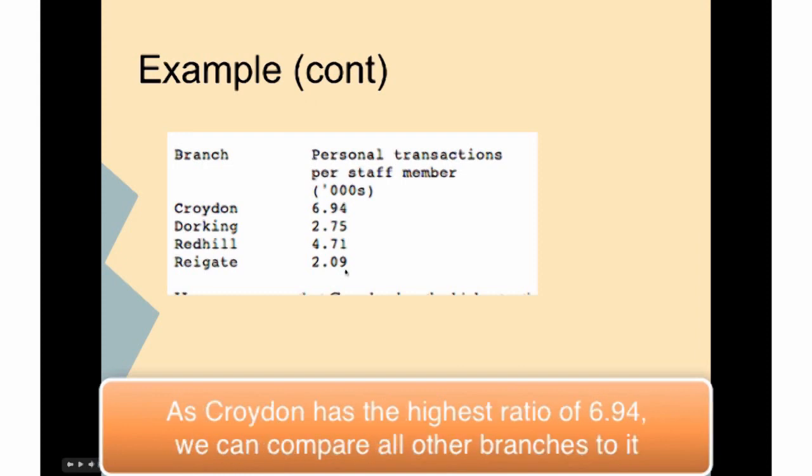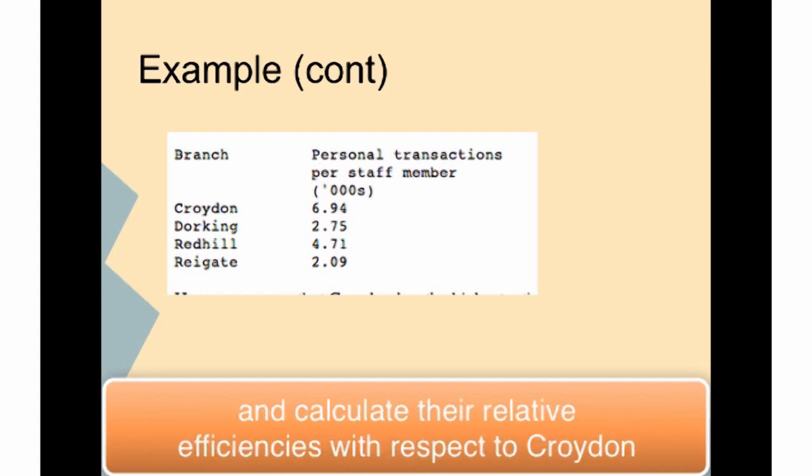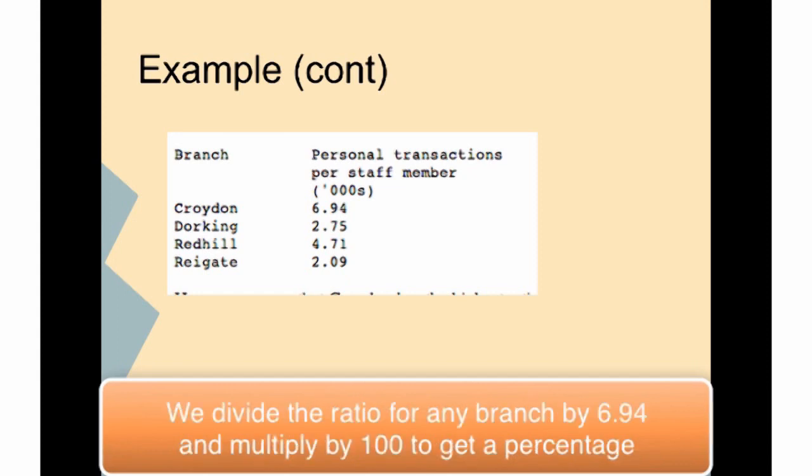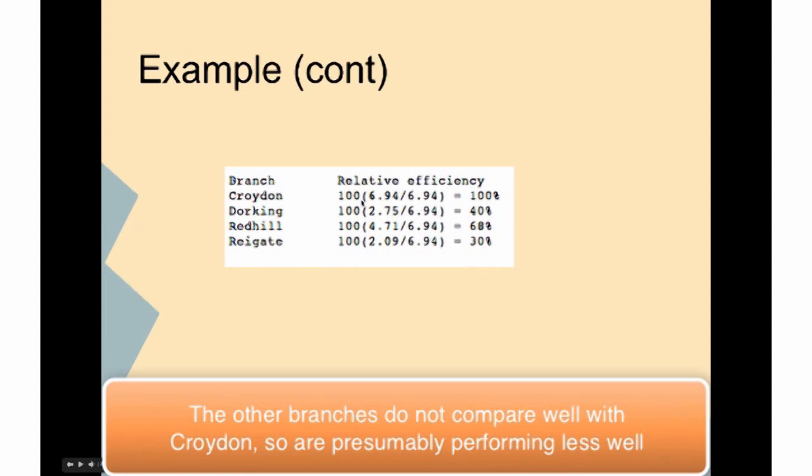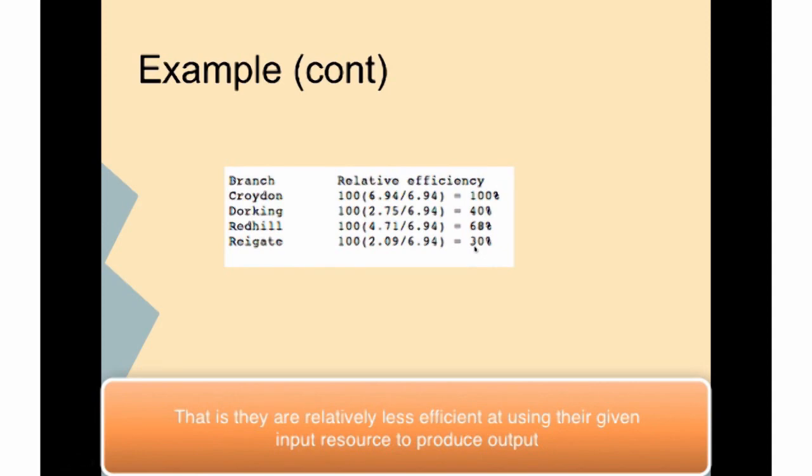As Croydon has the highest ratio of 6.94, we can compare all other branches to it and calculate their relative efficiencies. To do this, we divide the ratio for any branch by 6.94 and multiply by 100 to convert to a percentage. The other branches do not compare well with Croydon, so are presumably performing less well - they are relatively less efficient at using their given input resource to produce output.